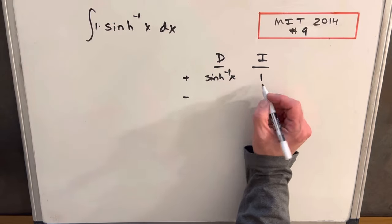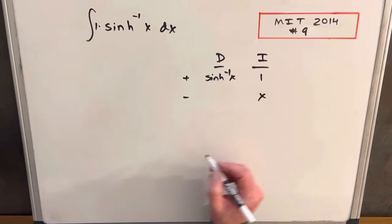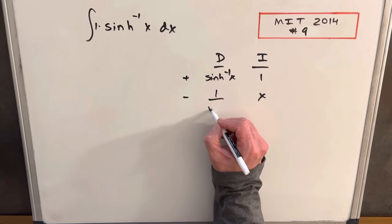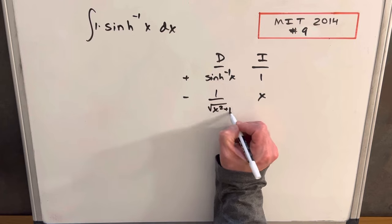Okay, so first let's just integrate one and we're going to get an x. Now the derivative of sinh inverse is going to be just one over square root of x squared plus one.